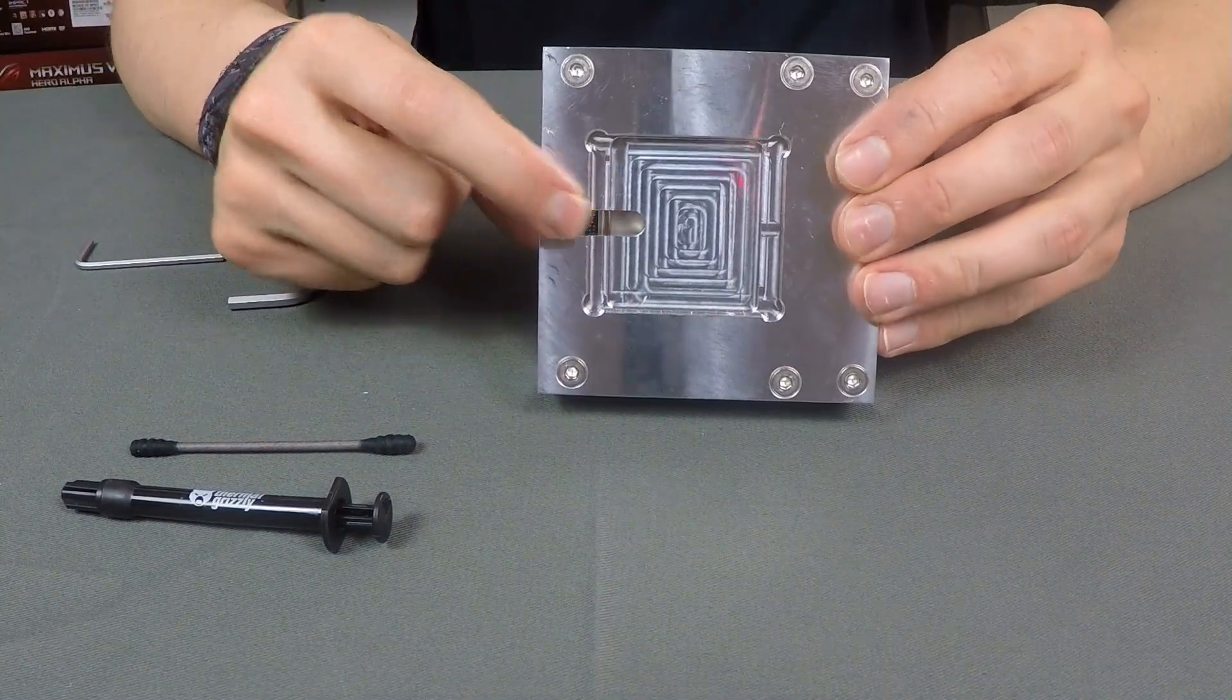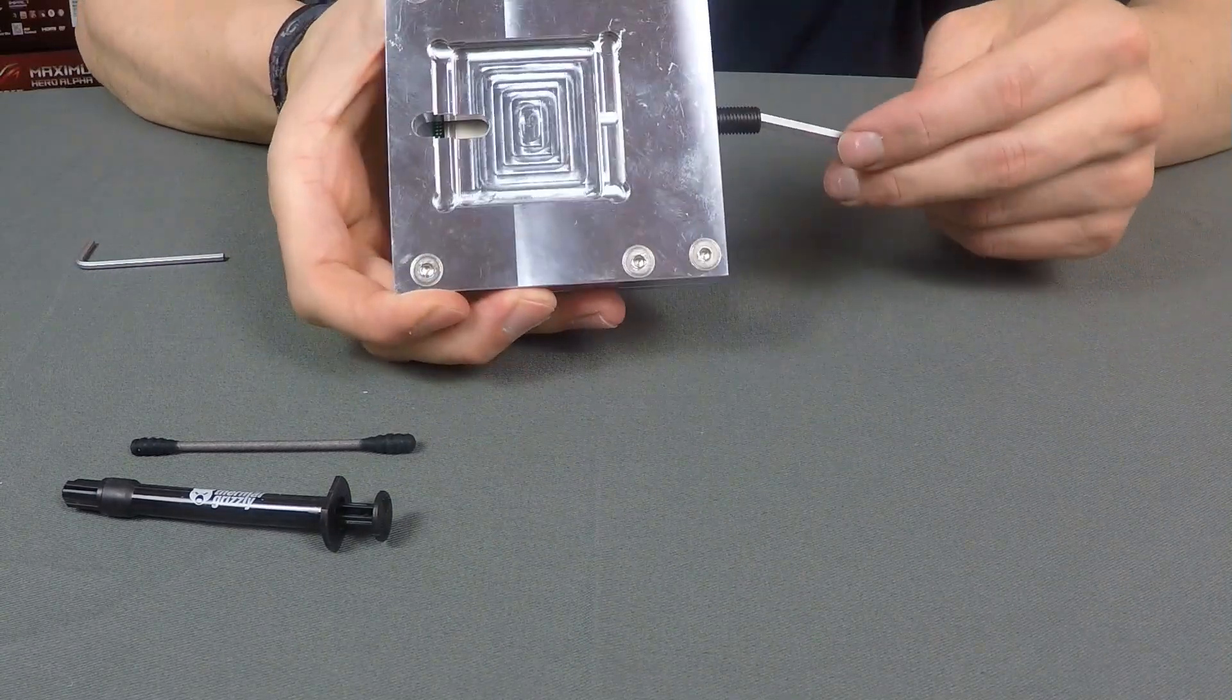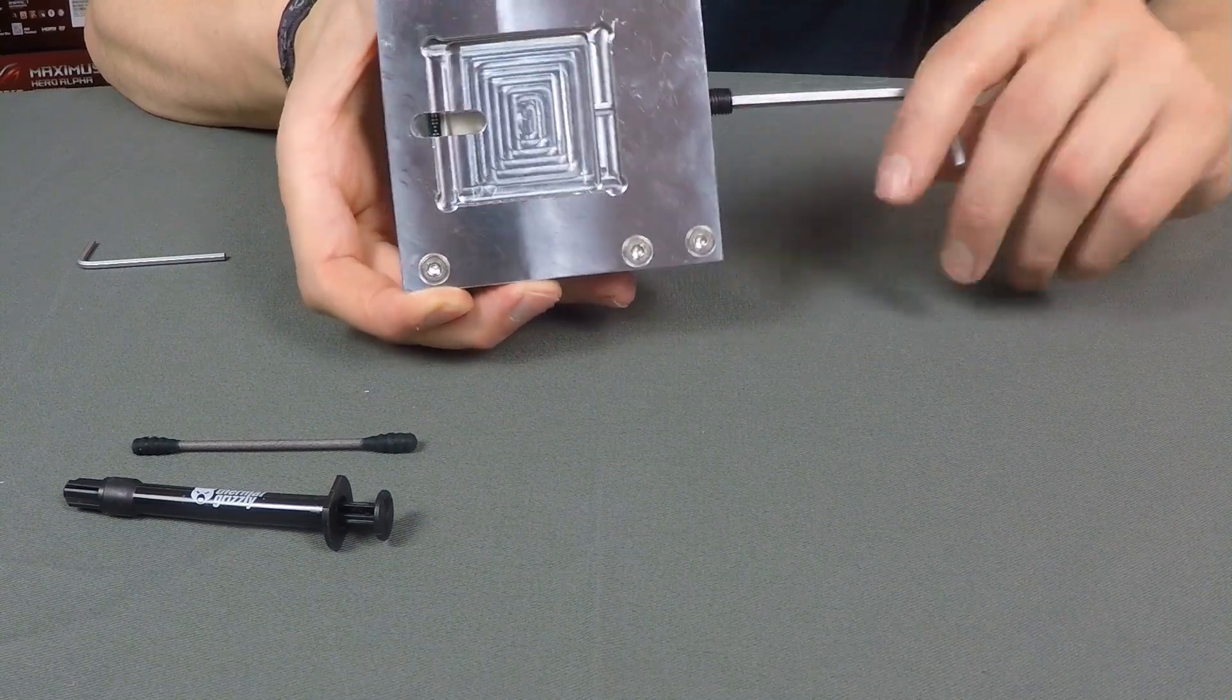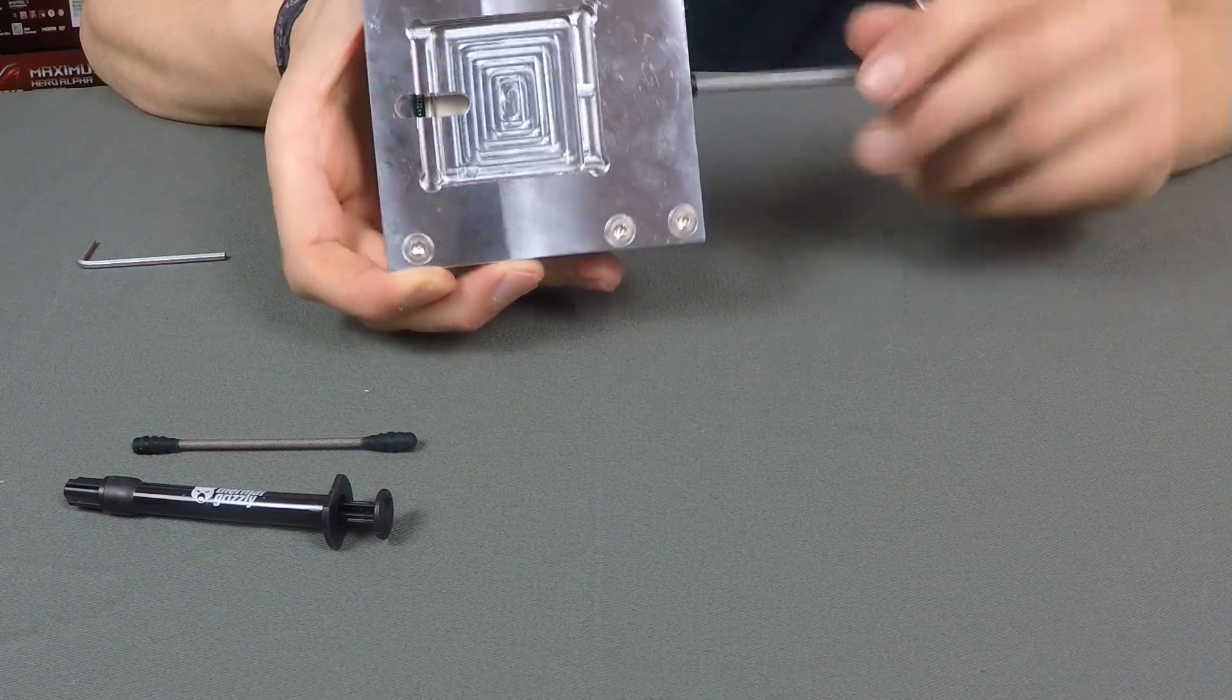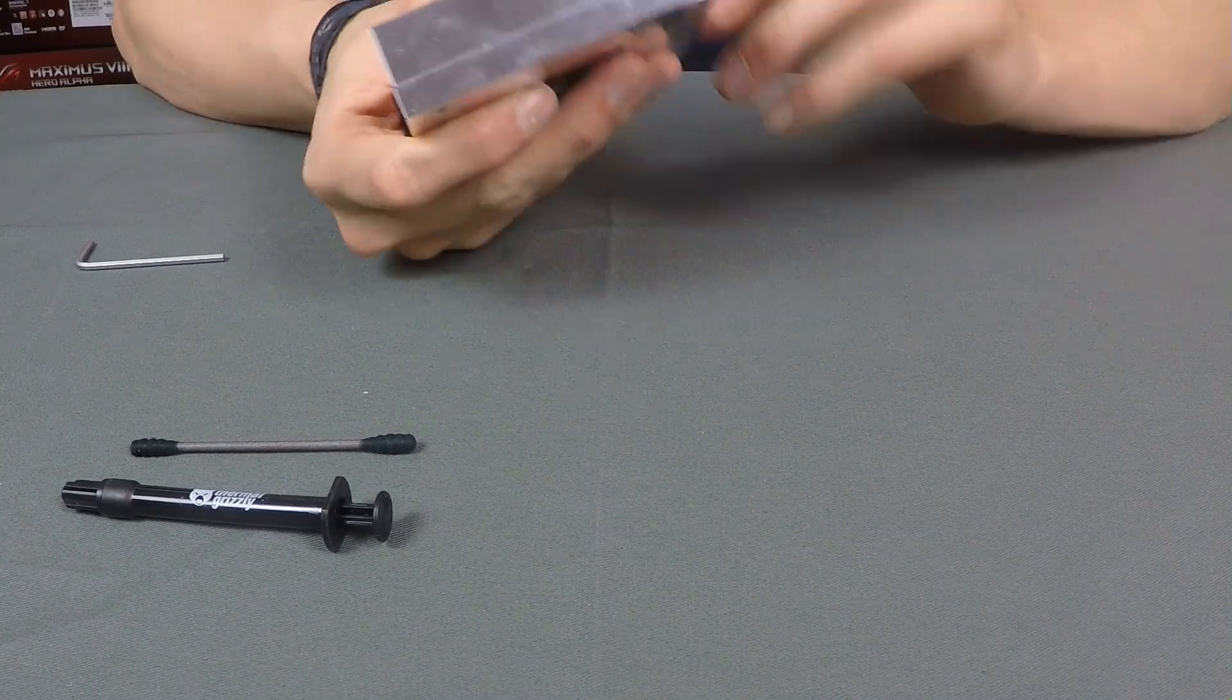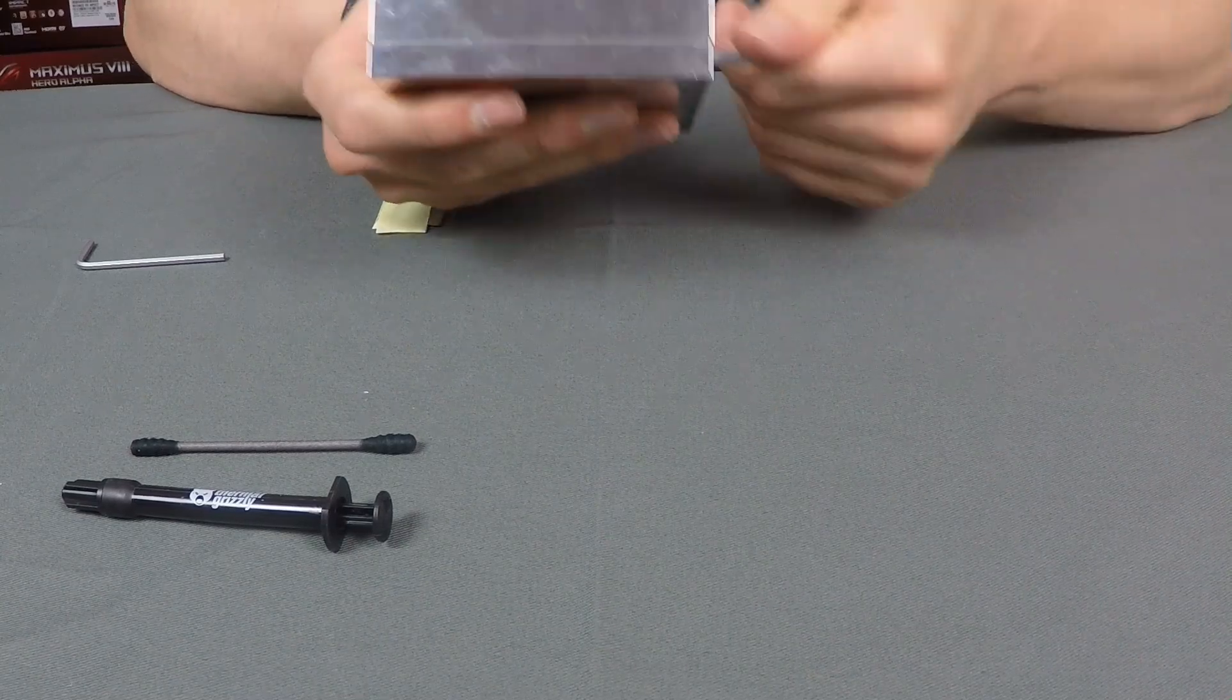Now you can see there is a window in the tool which is useful to take a look at the CPU during delidding, because it's very important that you don't push the IHS too far. Otherwise you might damage your CPU. I recommend to not push further than one millimeter. First of all, just screw the main screw totally in until you can feel that there is some pressure building up. Once you can feel the pressure building up, make sure you turn really carefully and slow, and always keep an eye at the window. The IHS should not move further than one millimeter. Otherwise you could damage your CPU.